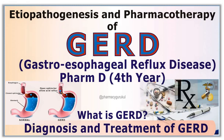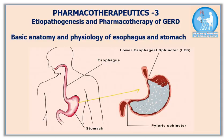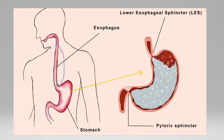Hello guys, in this video I will discuss the etiopathogenesis and pharmacotherapy of GERD. First, let's try to understand the basic anatomy and physiology of the esophagus and stomach. This portion is known as the esophagus — it is a muscular pipe that carries food and liquid from the pharynx to the stomach.